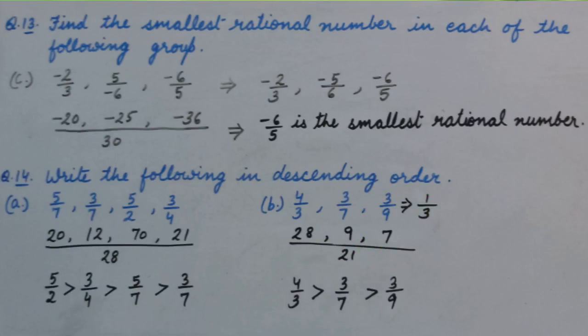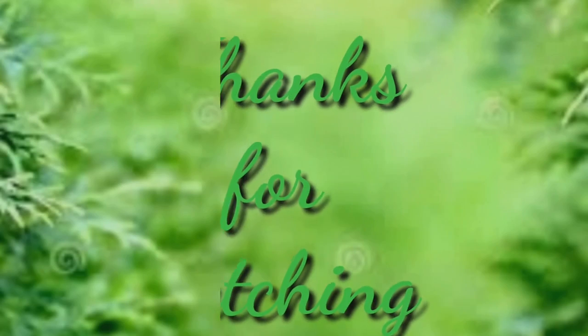When we arrange them in descending order, then 4 upon 3 is the greatest one, which is greater than 3 upon 7, and which is greater than 3 upon 9.